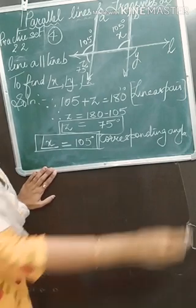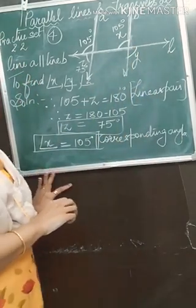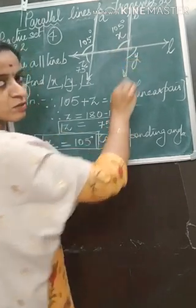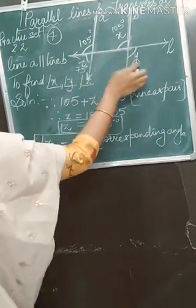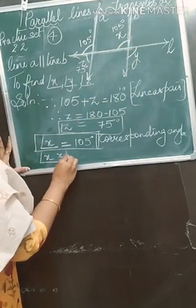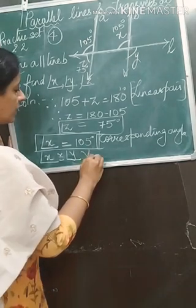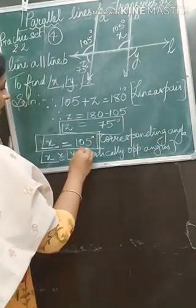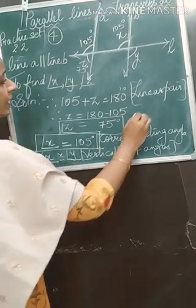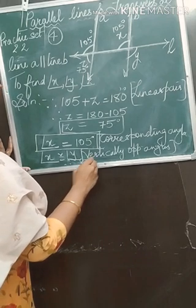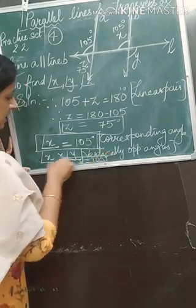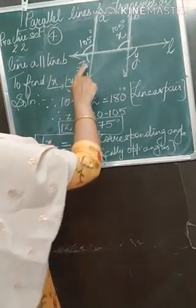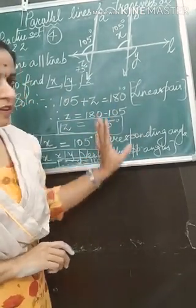If angle X is 105 degrees, what is the relation between angle X and angle Y? Our favourite — vertically opposite angles. The measure for angle X will be the same as its vertically opposite angle Y. So angle X is congruent to angle Y. Reason: vertically opposite angles. Therefore angle Y will also be 105 degrees.